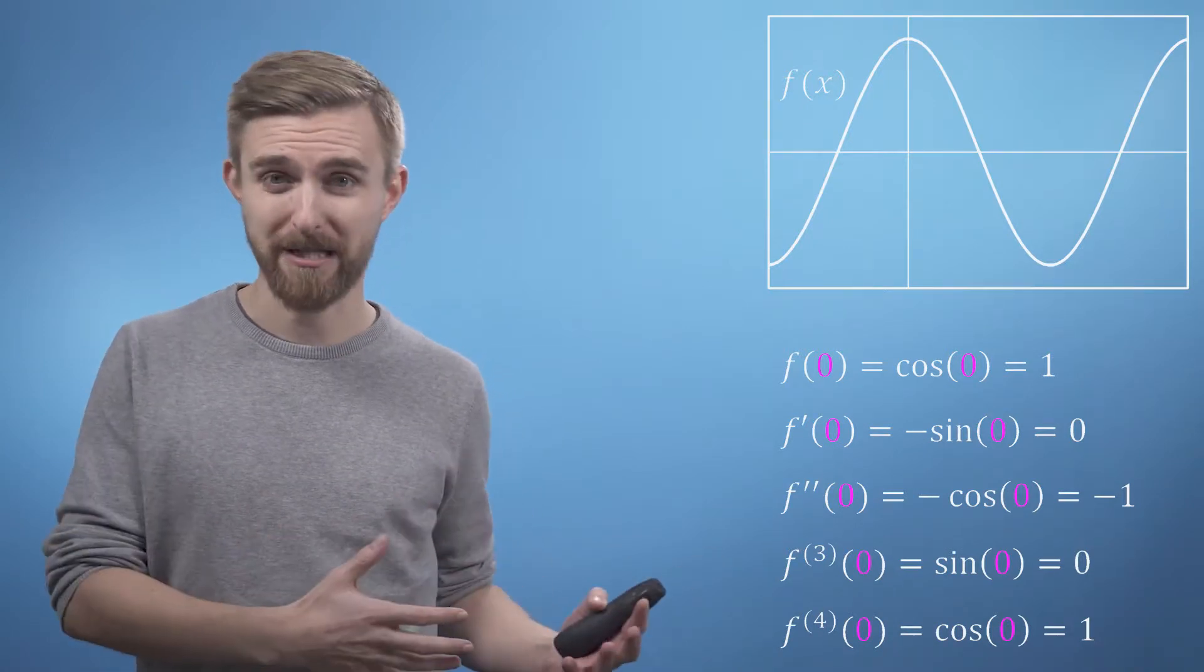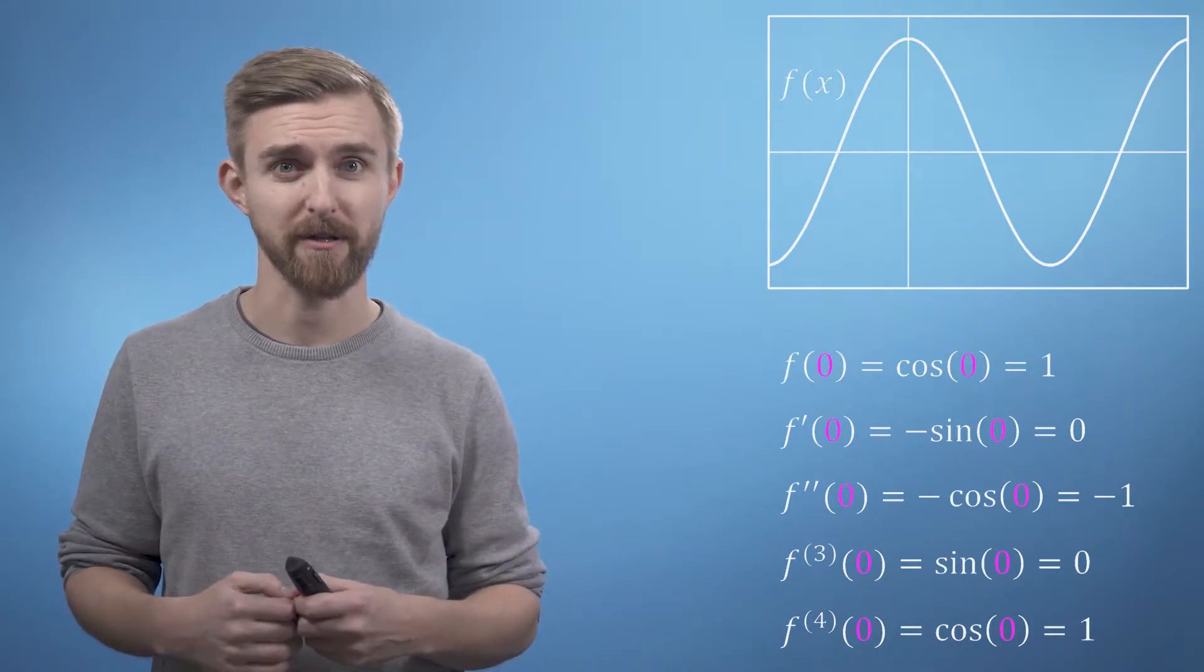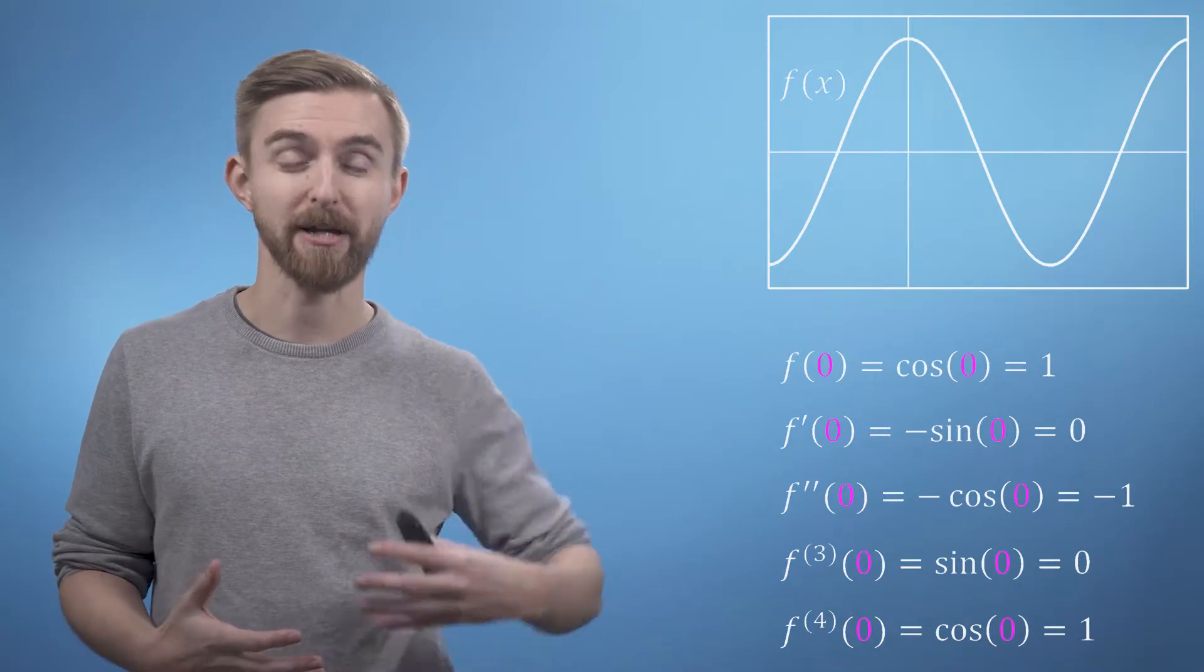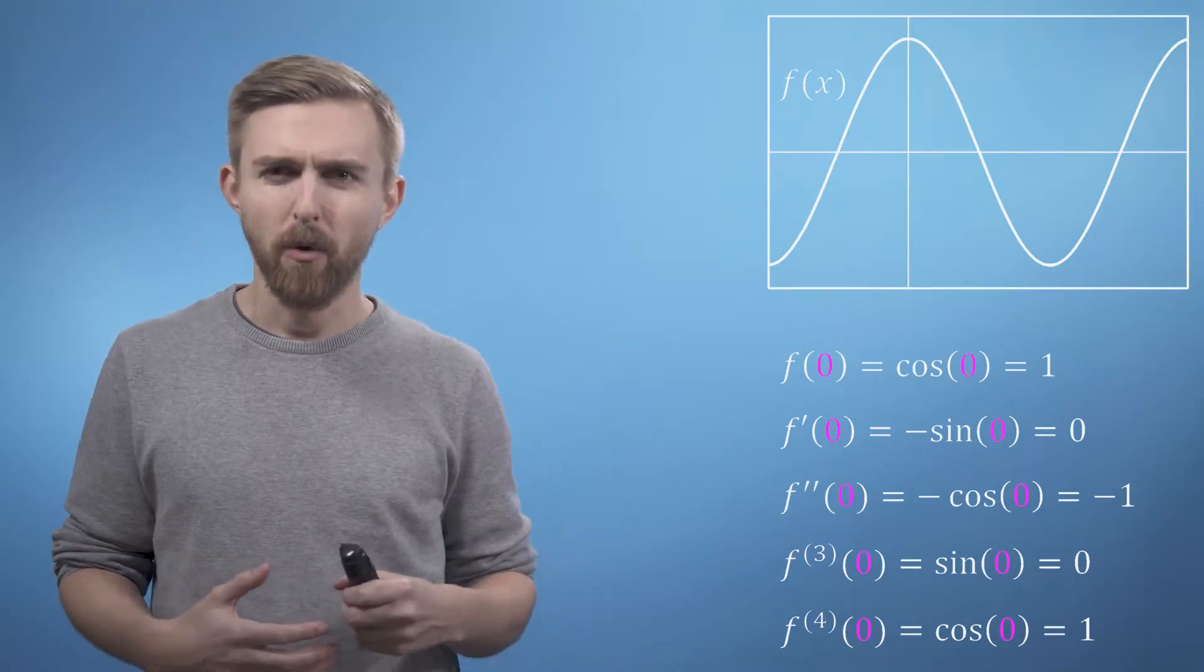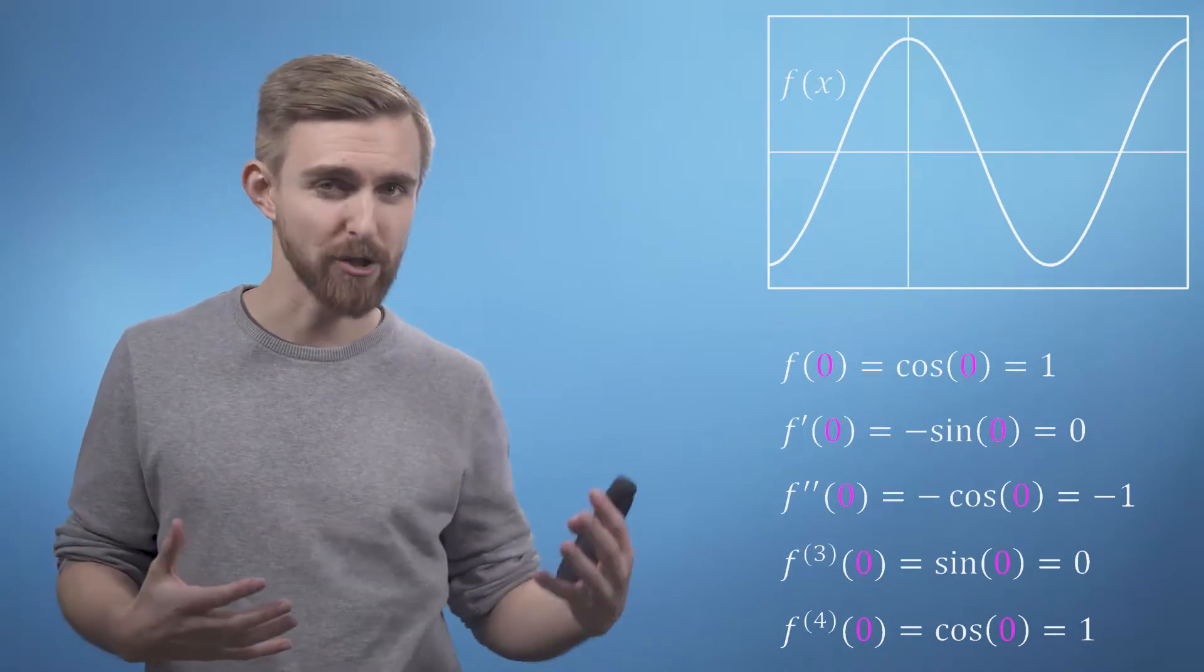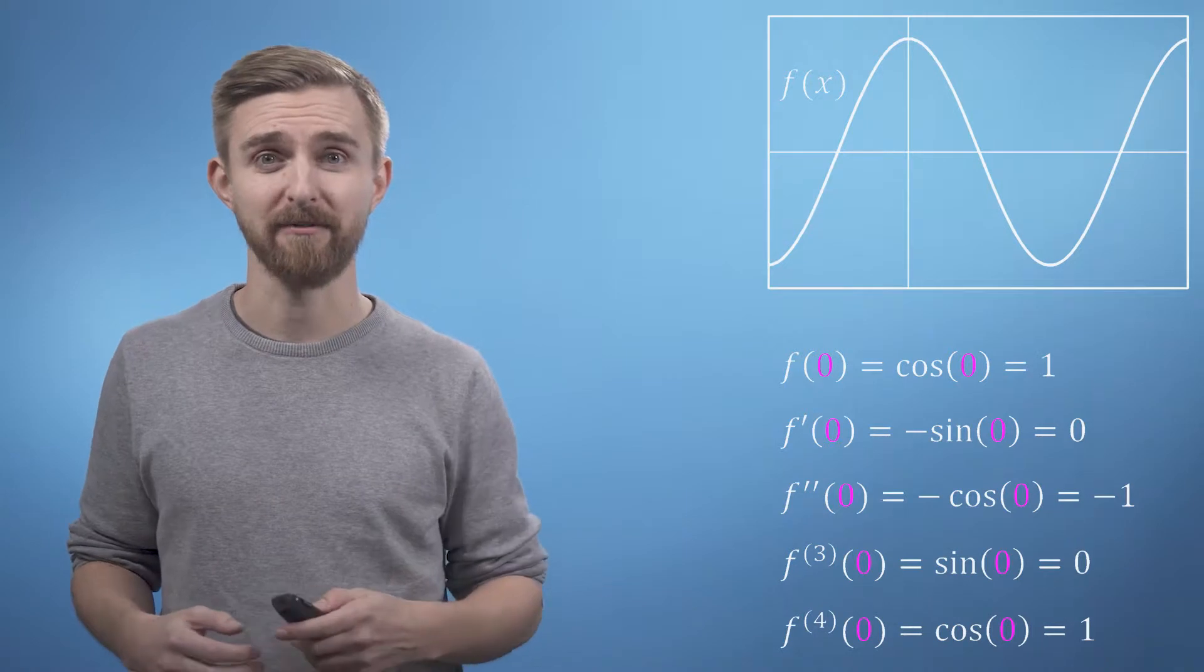This must mean from a power series perspective that every other term will have a zero coefficient. Notice that these zeros will occur whenever we differentiate an odd number of times which means that all the odd powers of x like x to the 1, x cubed, x to the 5, etc. will all be absent from the series.